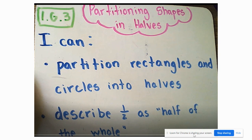Yesterday we started talking about partitioning shapes and halves. We're going to continue that discussion today. So let's look at our I Can statements. We're partitioning rectangles and circles into halves, keeping in mind that squares are also considered rectangles. We're also going to describe half or one half as half of the whole.